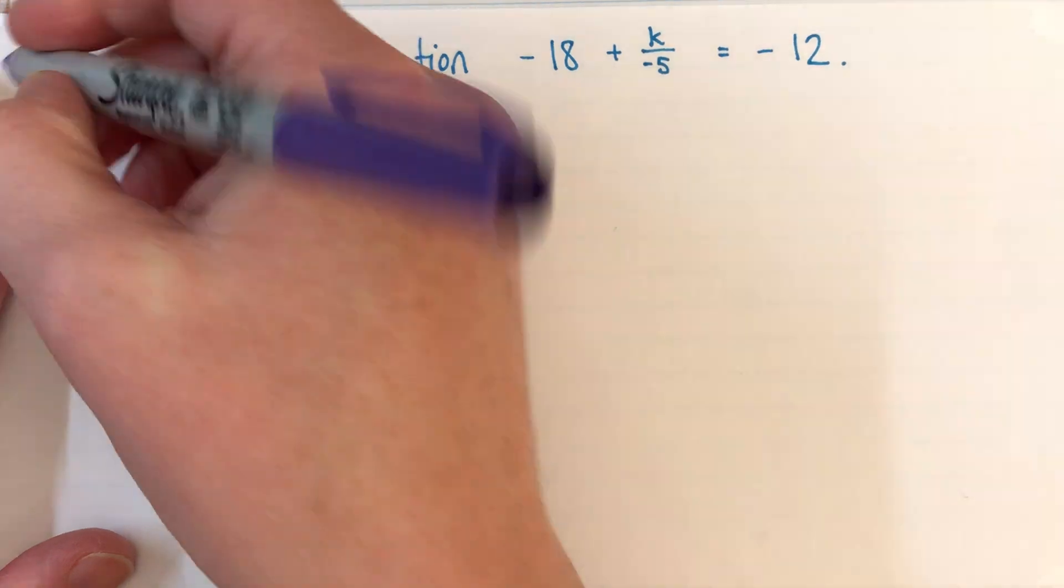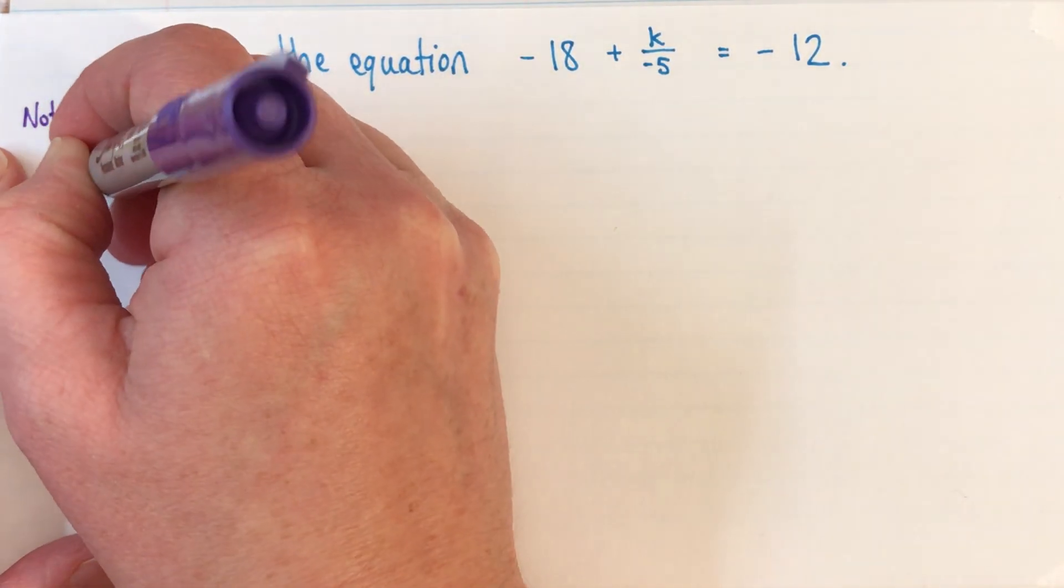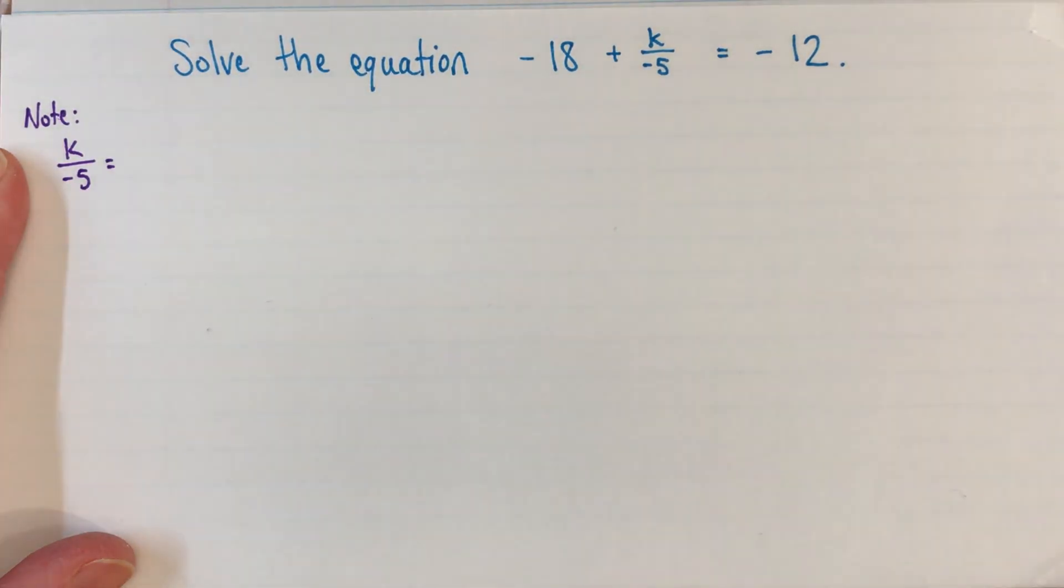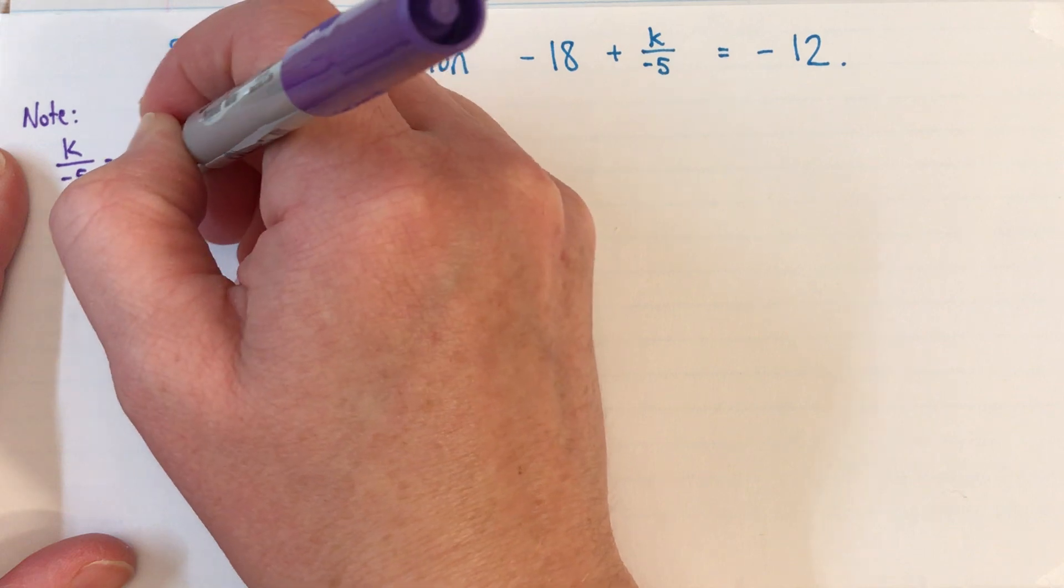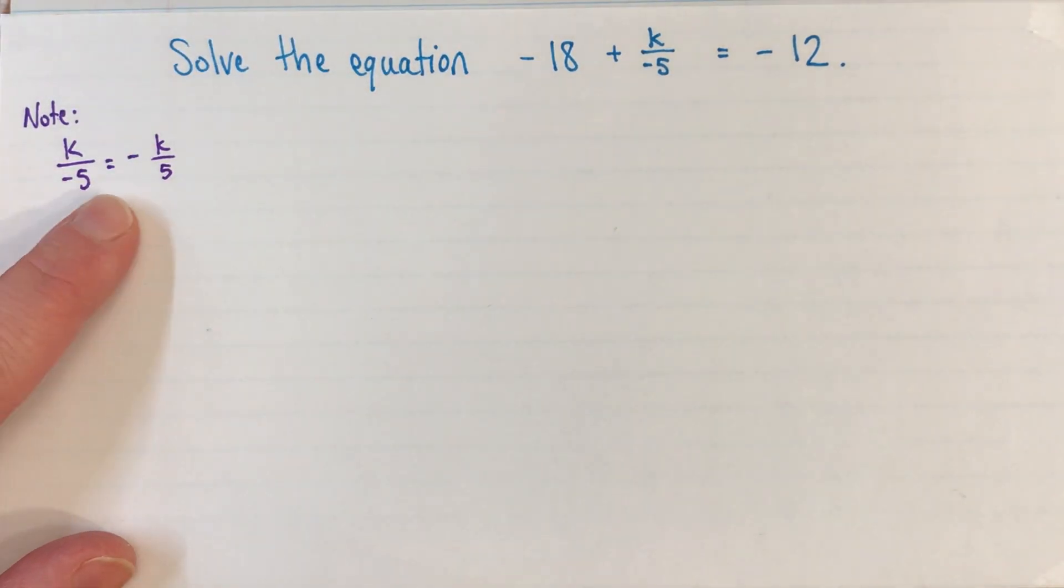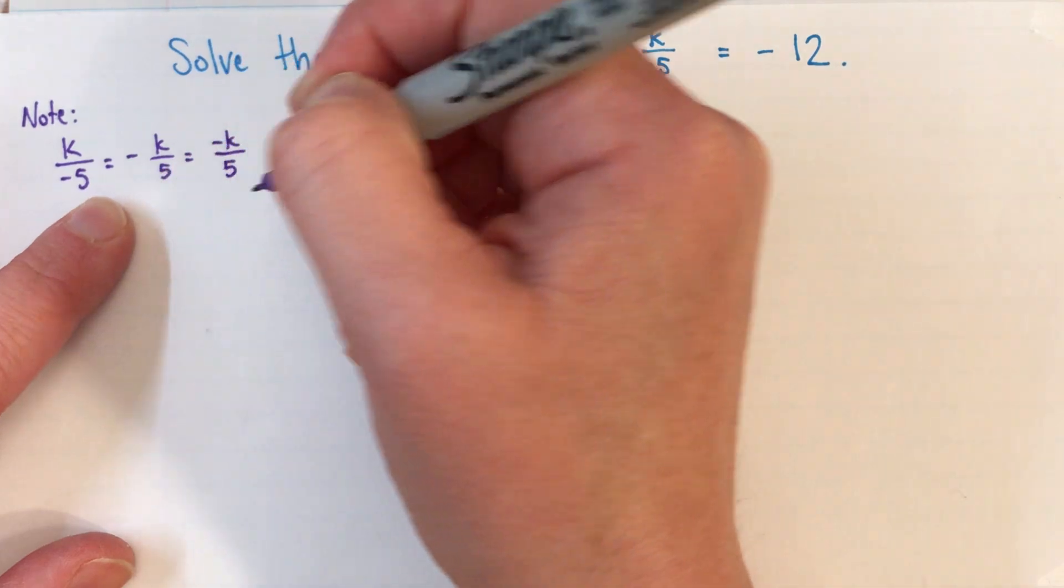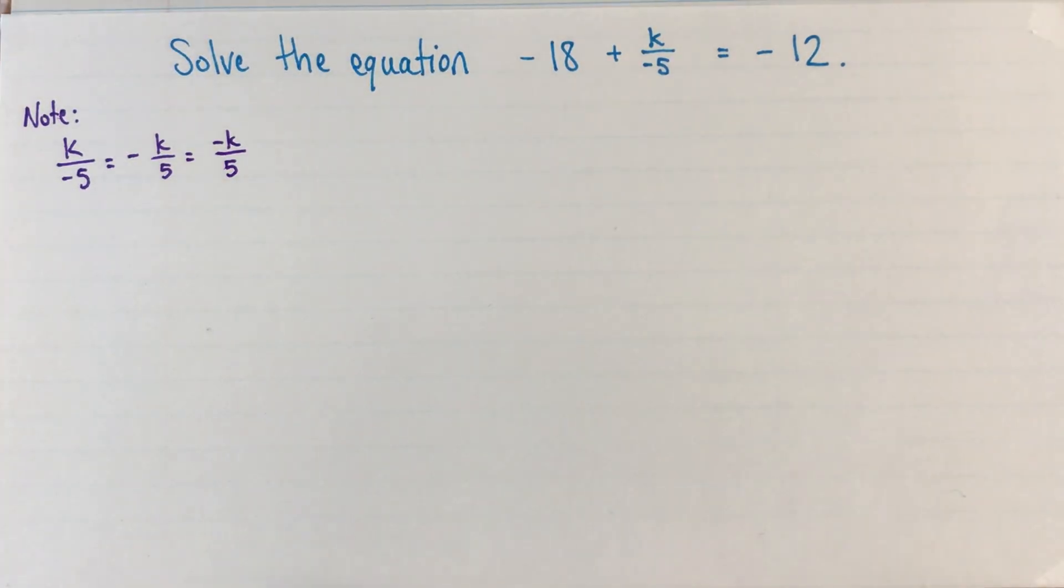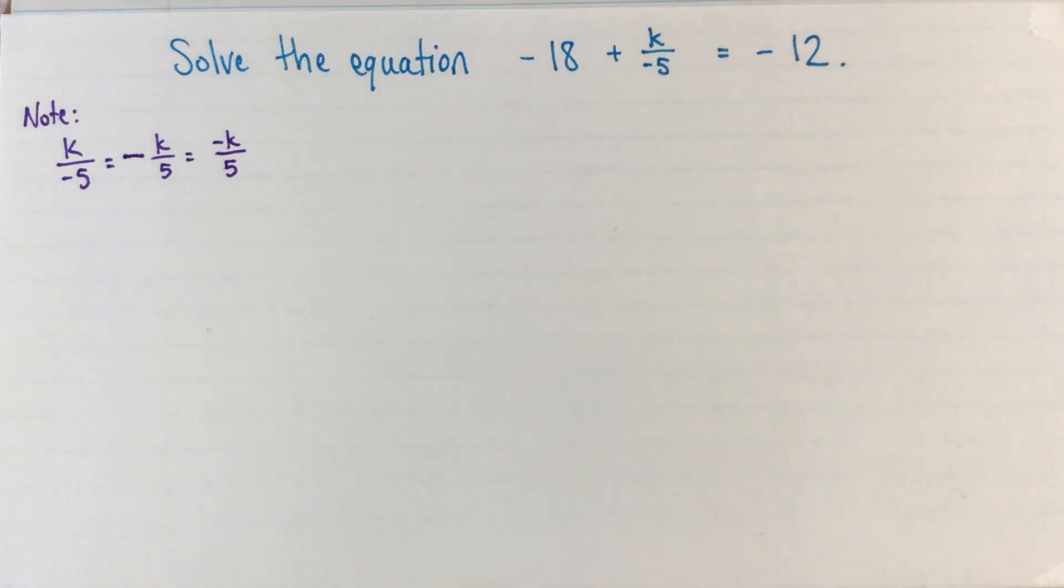Before we go on any further, I just want to make a little note. k divided by -5, that's the same thing as -k divided by 5. Sometimes it's easier to think of it one way, and sometimes it's easier to think of it another way. And actually, it's also the same as -k in the numerator divided by 5. So you should feel free to sort of change among those three based on just whatever is easier for you in the way that you're thinking about a problem.